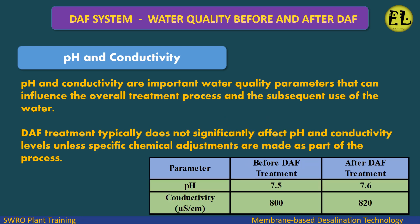pH and conductivity are important water quality parameters that can influence the overall treatment process and the subsequent use of the water. DAF treatment typically does not significantly affect pH and conductivity levels unless specific chemical adjustments are made as part of the process.